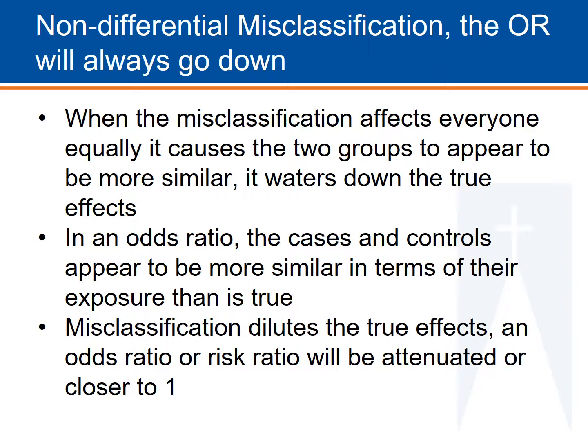When the exposure is misclassified equally for cases and controls, cases and controls appear to be more similar, diluting the true effects and creating an odds ratio or risk ratio that is what we call in epidemiology attenuated, or closer to 1.